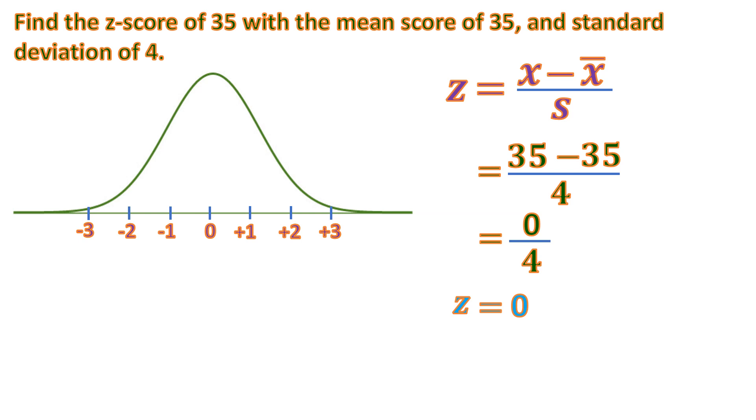So 0 is here. So obviously it's in the middle. And this means the mean, which is the 35, is always having a standard score of 0.